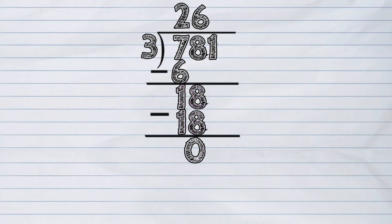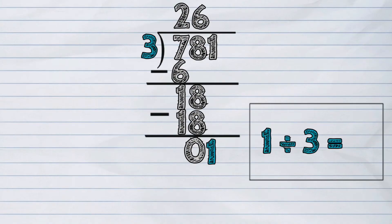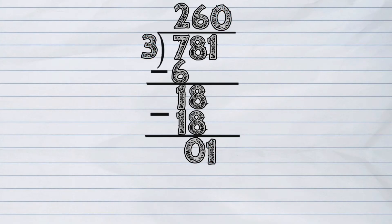And then, we bring down the next number from the dividend, which is 1. We'll repeat the step 1 process by dividing 1 by 3. Can we divide 1 by 3? That would not be enough. So, what we are going to do is to write down 0 as the answer. Then, multiply 0 and 3. The answer is 0. Now, we subtract 0 from 1, which gives the answer of 1.